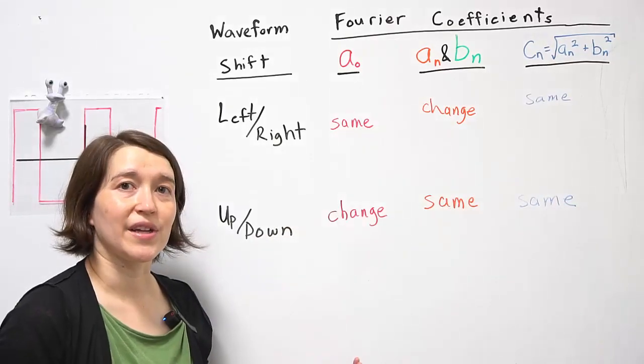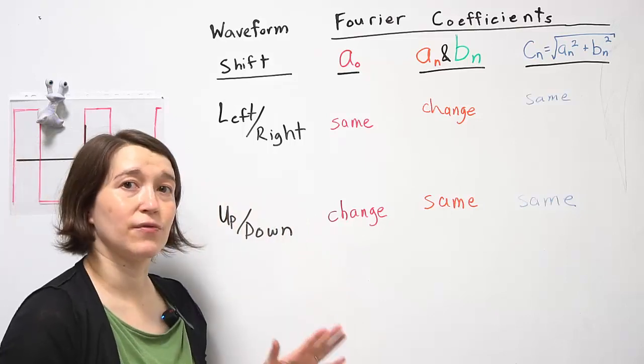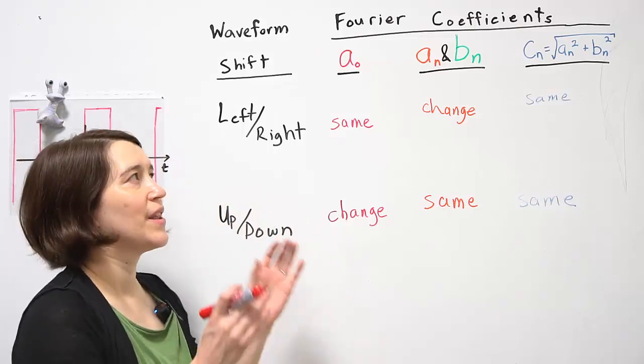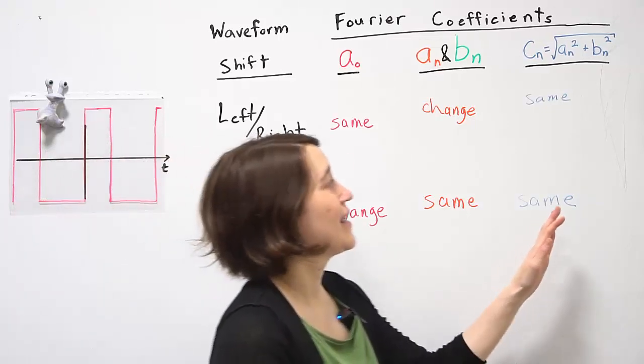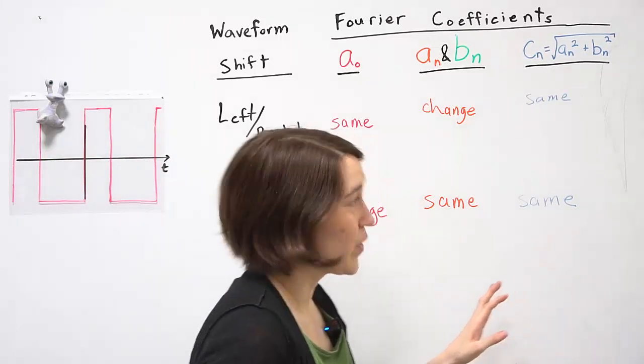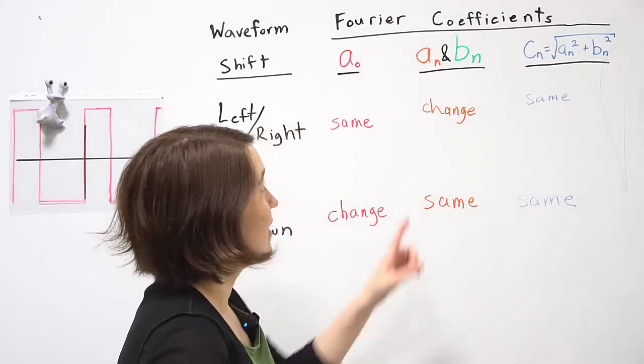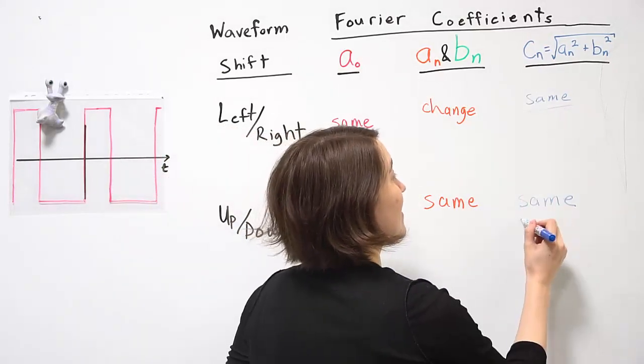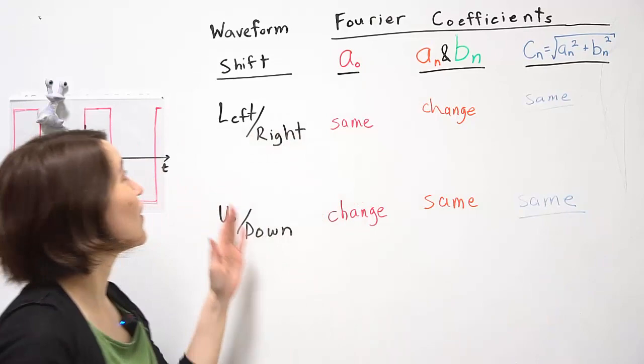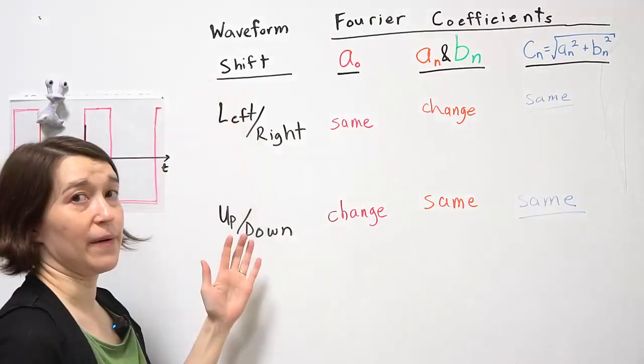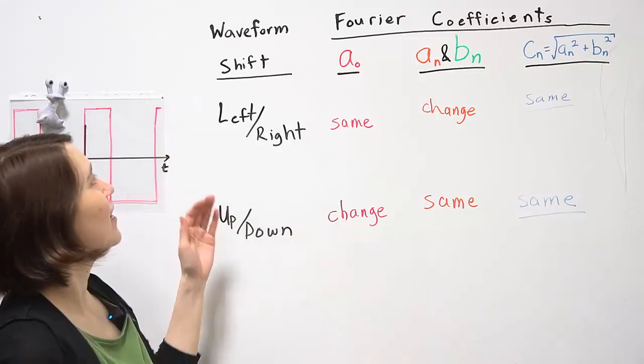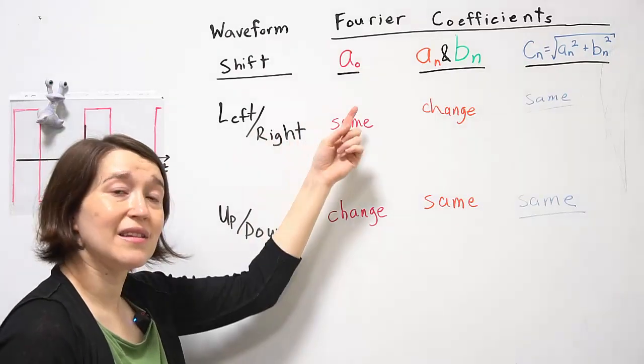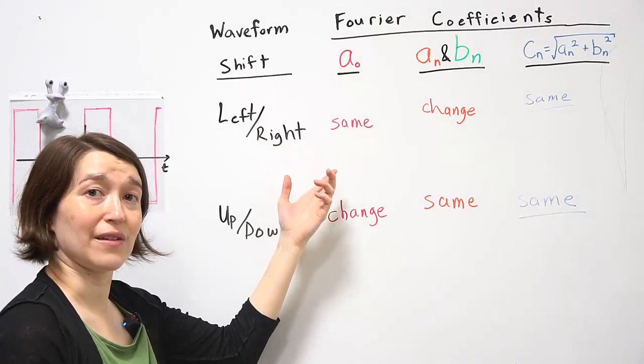When we're calculating the harmonics for a waveform, the important values are a0 and cN. We see that cN is the same regardless of if you shift left and right or up and down. So that's good for calculation. If you shift left and right, the DC value is the same, so it has no effect on that calculation.